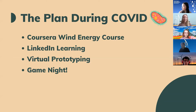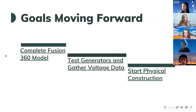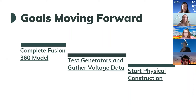Some progress highlights: we designed our universal base and are beginning the Fusion 360 design for it. We conducted battery research and selected the final battery to store all the energy we produce. We created living documents for battery, universal base, horizontal and vertical setups, and Arduino — laying out every possibility and categorizing necessary design elements. We completed the Arduino circuit we'll be using to record all voltage readouts and align our turbine with wind direction. Goals moving forward: complete a full Fusion 360 model of our turbine, test each generator to decide which one to use, and start physical construction of the turbine in the fall.